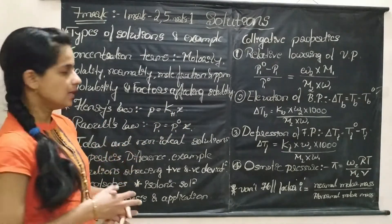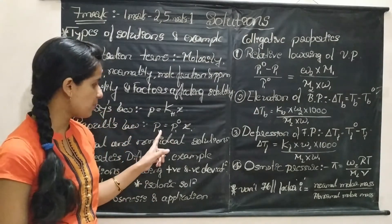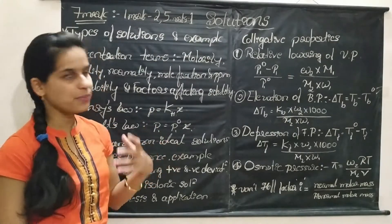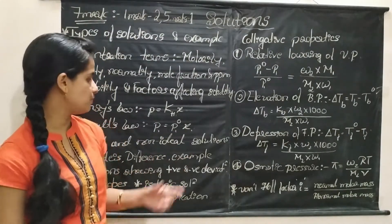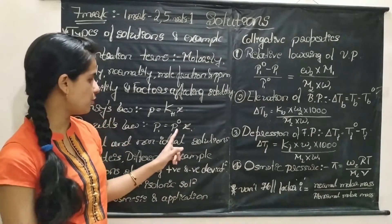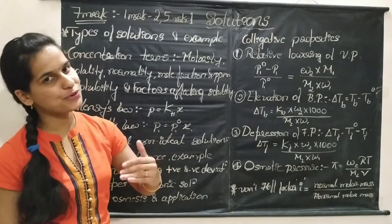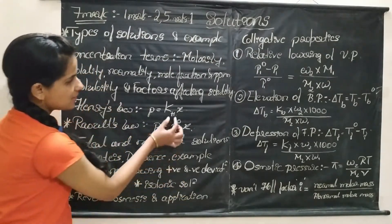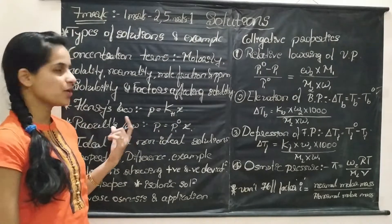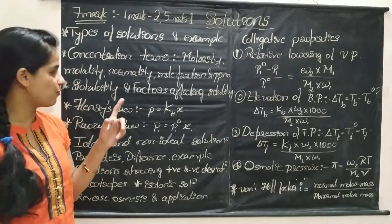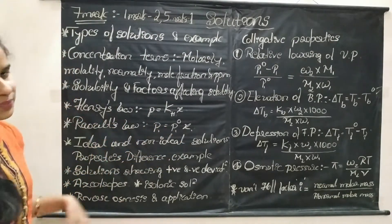In case of Raoult's law, the statement is: for a solution of volatile liquids, the partial vapor pressure of each component in the vapor phase is directly proportional to the mole fraction of that component in the solution. So P1 = P1° × X1. Here, P1° is the vapor pressure of the pure component. If we replace KH by P1°, then we get the mathematical expression of Raoult's law. So we can say Raoult's law is a special case of Henry's law, where KH equals P1°. This is also a very important concept.